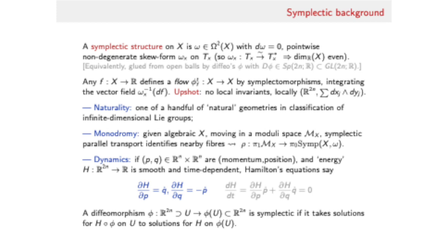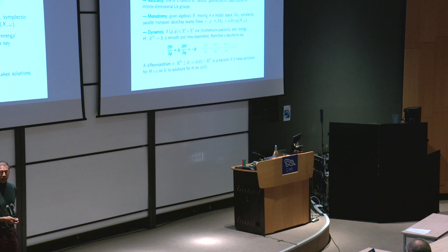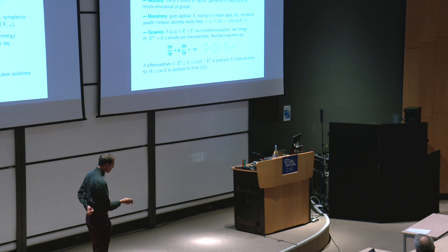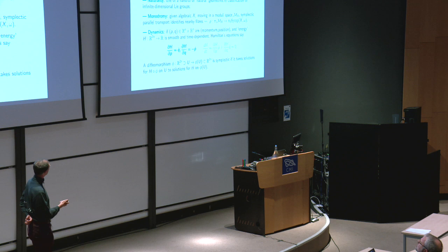Any smooth algebraic variety is symplectic, and symplectic geometry is bound up with the geometry of families of varieties. If you have a moduli space of varieties, nearby points will be the same symplectically but not algebraically. So you get monodromy representations that naturally live in symplectic mapping class groups.